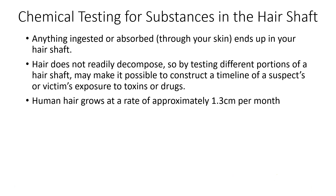Chemical testing for substances in the hair shaft is one of the main chemical tests that can be performed on a particular individual. Anything that is ingested or absorbed through the skin ends up in your hair shaft, and the hair shaft can actually be used as a timeline to determine, based on a normal growth rate, when that individual was subjected to a particular toxin, chemical, or poison. That data is stored in the hair shaft at various places. Hair does not readily decompose — it will remain on your head until you cut it — and can hold on to chemical and toxin data for quite a while.